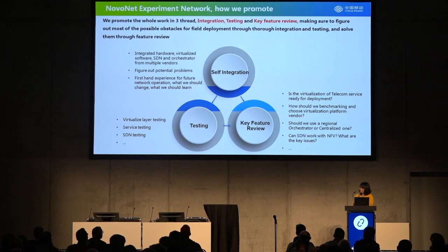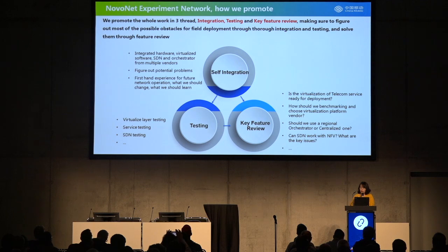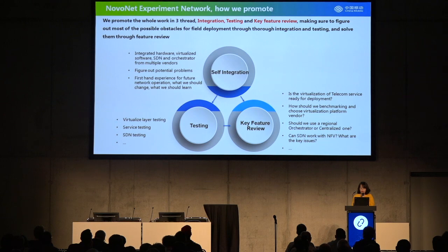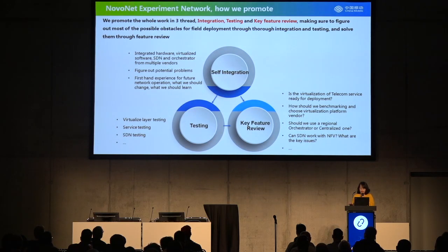This is the basic idea of how we actually promote this whole experiment network. It is not just a network where you do testing, but we are also including self-integration and some key features review into the whole experiment network work. We are trying to promote this work in three threads. First, we will do the self-integration of the hardware, the different software including SDN and OSS layers from multiple vendors. With this progress, we can figure out lots of potential problems and get first-hand experience for the whole future network integration and operation.